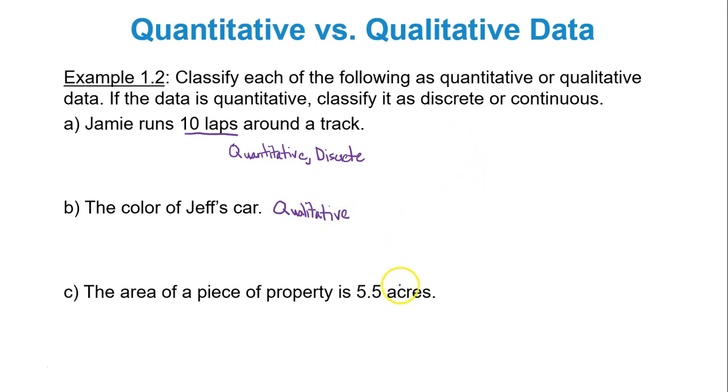Next, the area of a piece of property is 5.5 acres. When you start seeing those decimals going around, well, first off, we do know for sure that our data would be quantitative in this case. Is it discrete or continuous? Well, decimals means it's a good possibility it's continuous. Well, 5.5, I could say 5.51. You could say 5.512. Because of the decimal place deal, we have continuous here. Quantitative, continuous.